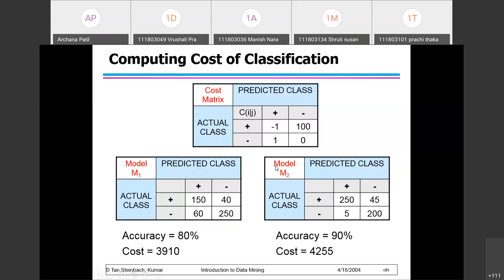There is model 1 and model 2 built on the dataset, with a cost matrix associated for classification. The cost matrix tells you that if the actual class is plus and the predicted is also plus, then the value associated with that classification is minus 1.